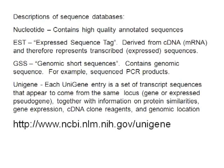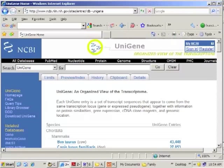Finally there's the UniGene database. Each UniGene is a set of transcript sequences that appear to come from the same locus. This is essentially a bioinformatic compilation where all of the ESTs for a specific organism are contigged, and then the UniGenes are posted as one set.